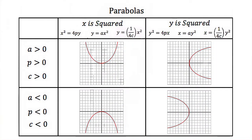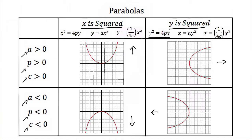Another thing we need to know about parabolas is which direction they're going to open. If x is squared, then our parabola is going to open in either the positive y direction or the negative y direction. If y is the variable being squared — say y squared is equal to 4px — then our parabola is going to open in either the positive x direction or the negative x direction. We can determine this by looking at our a, p, or c term, depending on which standard form your textbook uses. If that term is positive (greater than 0), the parabola opens in the positive direction; if negative (less than 0), it opens in the negative direction.